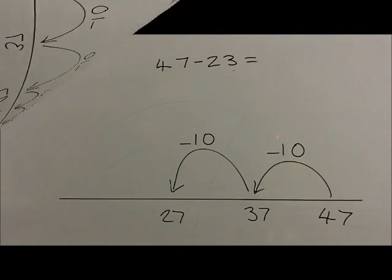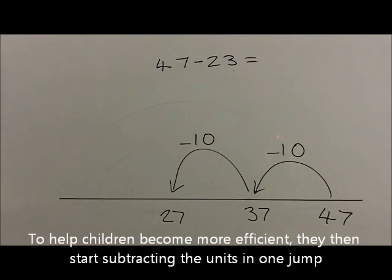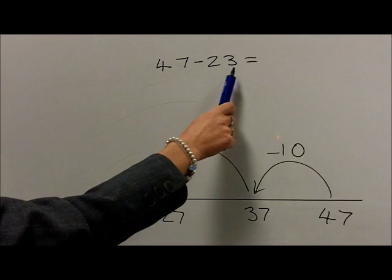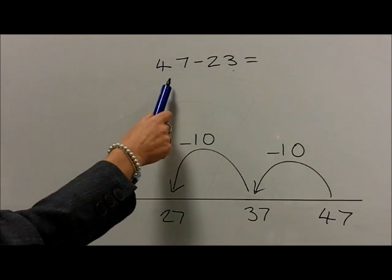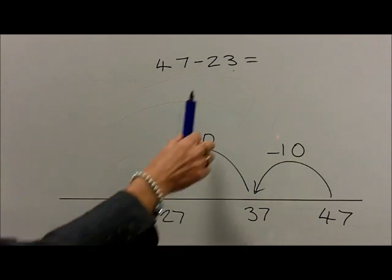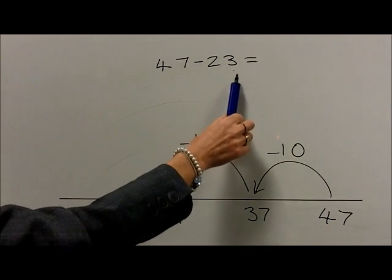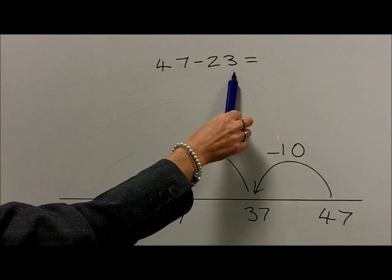To help children become more efficient, they then start subtracting the units in one jump. They use the known fact that 7 take 3 is equal to 4. So for the question 47 take 23, once they have subtracted the tens, they then subtract the units in one jump.